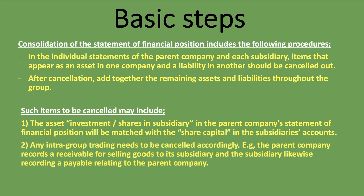Any intragroup trading needs to be cancelled accordingly, and that is another popular one. For example, the parent company records a receivable for selling goods to a subsidiary, and the subsidiary likewise records a payable relating to the parent company. The parent company might sell goods to the subsidiary on credit, and the parent company will record a receivable or debtors, while the subsidiary will record accounts payable or creditors relating to its own parent. So you need to net those ones out and cancel them because it's trading within the group.